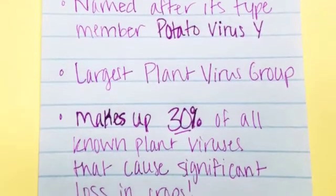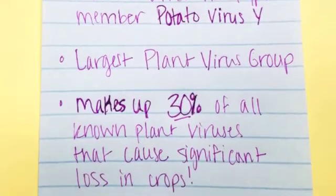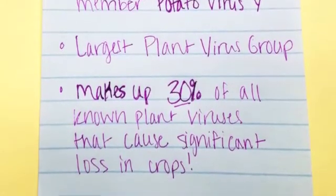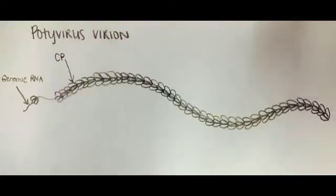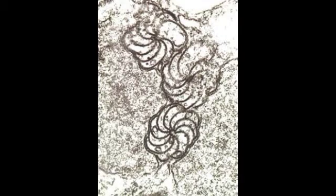Viruses that fall under the pody virus category include pepper mottle virus, plum pox potyvirus, tobacco etch virus, and watermelon mosaic virus. This is a picture of the flexible potyvirus particle. This is an image of a pinwheel inclusion body, which has been developed in a plant cell that has been infected by the soybean mosaic virus, which is a virus that falls under the pody virus category.